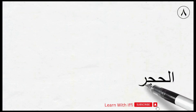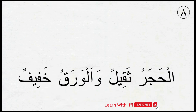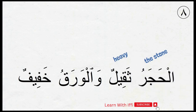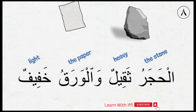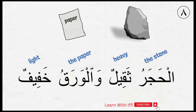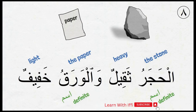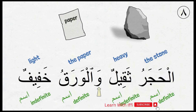Moving on to the next sentence: أَلْحَجَرُ ثَقِيلٌ وَالْوَرَقُ خَفِيفٌ. Here, أَلْحَجَرُ is 'the stone,' ثَقِيلٌ is 'heavy,' أَلْوَرَقُ means 'the paper,' and خَفِيفٌ means 'light.' So the sentence is: the stone is heavy and the paper is light. Which words are definite ism? أَلْحَجَرُ and أَلْوَرَقُ. Which words are indefinite ism? ثَقِيلٌ and خَفِيفٌ. And وَ is harf.